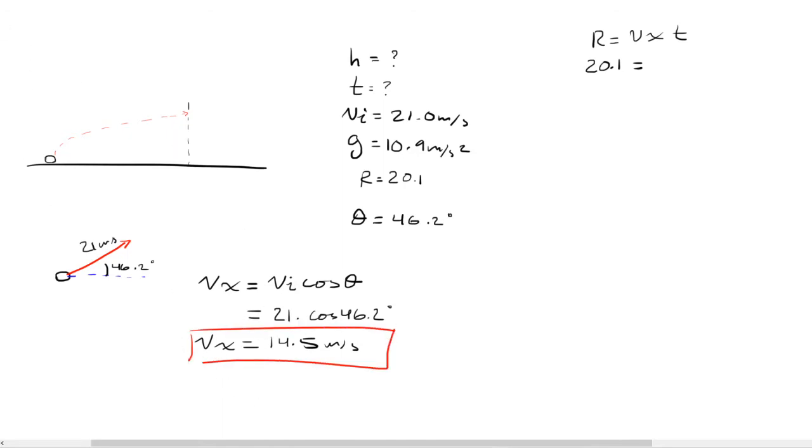Make sure your calculator is in degree mode and not radian mode or else your answers won't match up here. Since we have this velocity in the x, we're going to plug it in: 14.5 times t. If we divide both sides by 14.5, we get the time that the ball is in flight and that's going to be 20.1 divided by 14.5 which is 1.4 seconds.